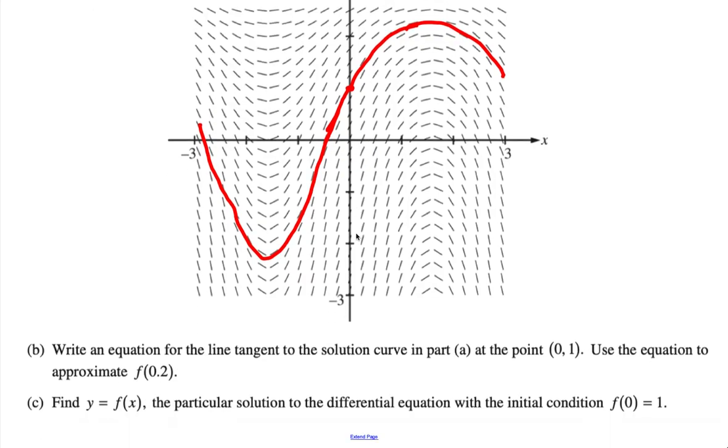Let's look at part B. Write an equation of the line tangent, so that means we need x and y value and then slope at this particular point. Use the equation to approximate this one.